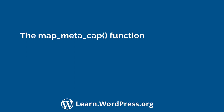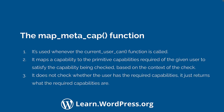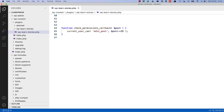You might be wondering what the map_meta_cap function is and what it does. The map_meta_cap function is used whenever the current_user_can function is called to check if a user role has a specific capability. If you dive into the code underneath the current_user_can function, you'll see it eventually calls the has_cap function of the WP_User class, which in turn calls the map_meta_cap function. map_meta_cap maps a capability to the primitive capabilities required of the given user to satisfy the capability being checked, based on the context of the check. The map_meta_cap function does not check whether the user has the required capabilities - it just returns what the required capabilities are.